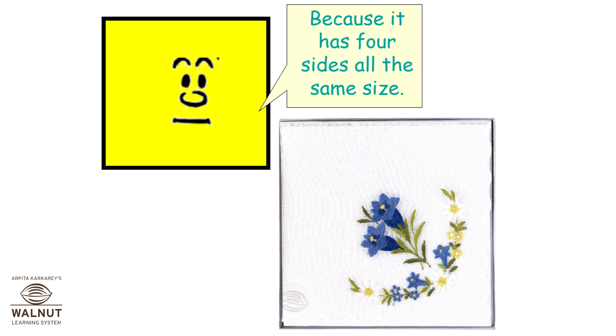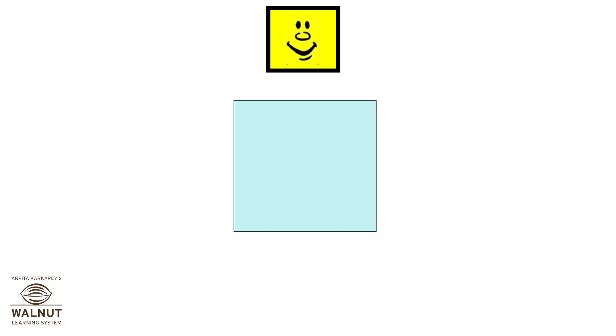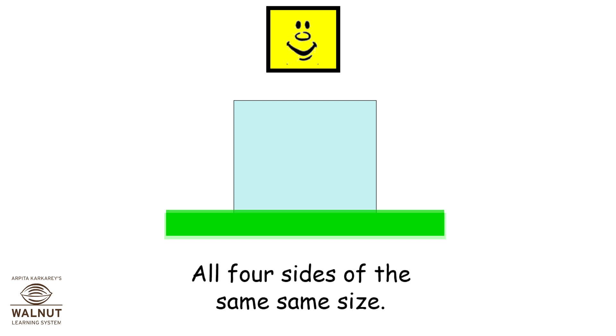Because it has four sides all the same size. One, two, three and four. Square has four same sides. All four sides of the same size.